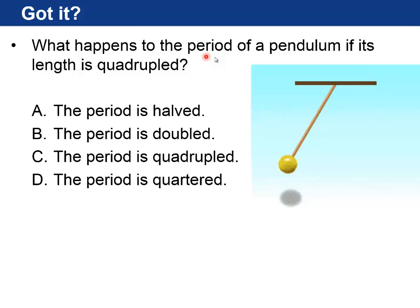Okay, so let's see if you've got it. What happens to the period of a pendulum if its length is quadrupled, meaning L goes up by a factor of 4? And the four choices are: the period is halved, goes down by a factor of 2; the period is doubled, goes up by a factor of 2; the period is quadrupled, goes up by a factor of 4; or the period is quartered, meaning it goes down by a factor of 4. Think about that, settle on an answer, and then resume the video.